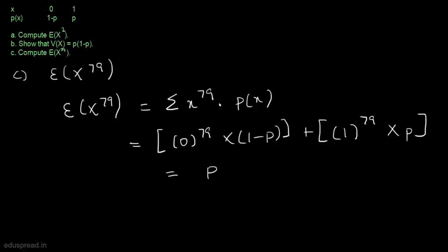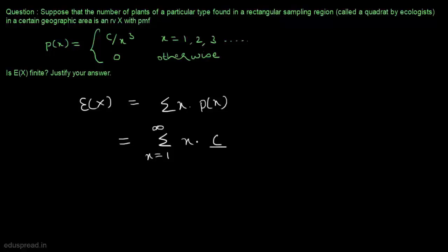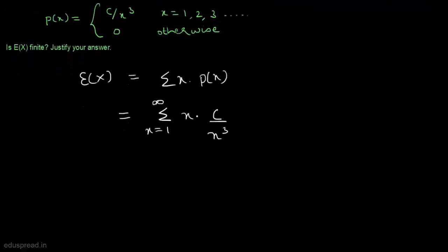Now let's move to question number 2. Suppose that the number of plants of a particular type found in a rectangular sampling region in a certain geographic area is a random variable with this probability mass function. Is expected value of x finite? We know that expected value of x is equal to summation of x multiplied by p(x). We are given that p(x) is equal to c divided by x cube for values of x ranging from 1 to infinity, and 0 otherwise. So this means E[X] equals the sum from x equals 1 to infinity of x multiplied by c divided by x cube. Because the probability of x equals c divided by x cube for all values of x from 1 to infinity.